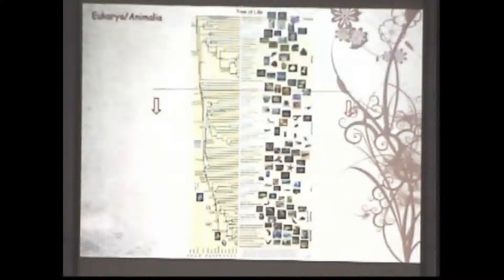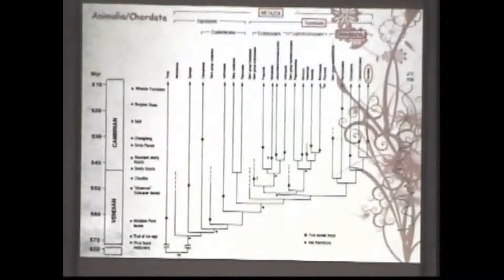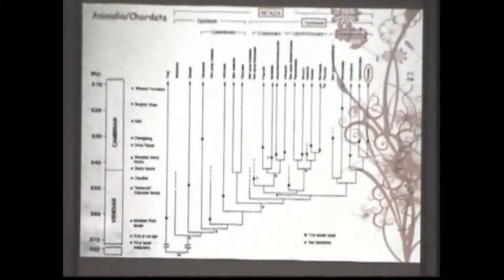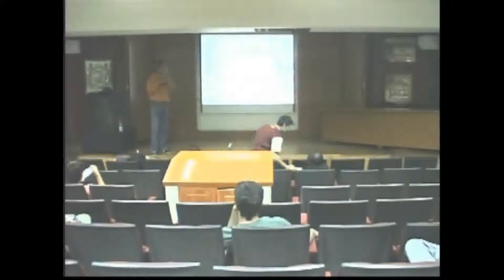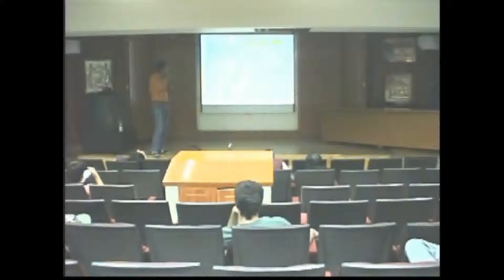En el árbol de la vida de Tree of Life, a partir de la línea dibujada después de las esponjas, todo lo que sigue se considera un animal. Ahí nosotros somos los reptiles, nuestro grupo de interés. En este caso son metazoos, animales triblásticos, es decir, cuando son embriones tienen tres capas embrionarias: el endodermo, el ectodermo y el mesodermo, que dan origen a las estructuras corporales. Dentro de esta clasificación también son deuteróstomos, por el tipo de desarrollo embrionario, y pertenecen al filo de los cordados.